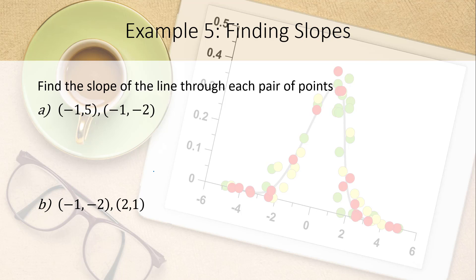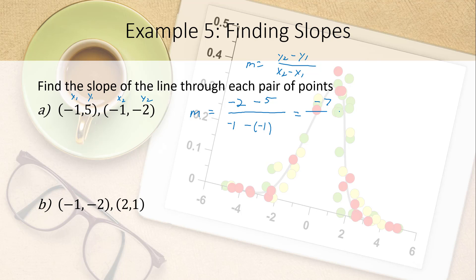Now find the slope for two specific points. Call the first (x1, y1) and the second (x2, y2). The slope formula gives m equals y2 minus y1 over x2 minus x1. Here we get negative 2 minus 5 in the numerator, and negative 1 minus negative 1 in the denominator. The denominator equals zero, so the slope is undefined — confirming the line is vertical.